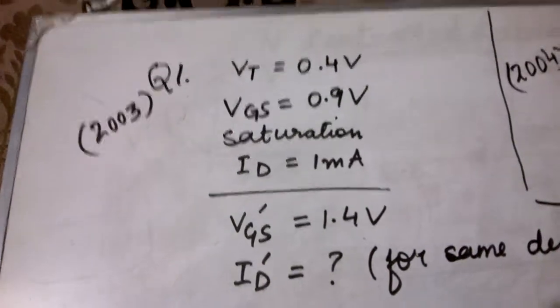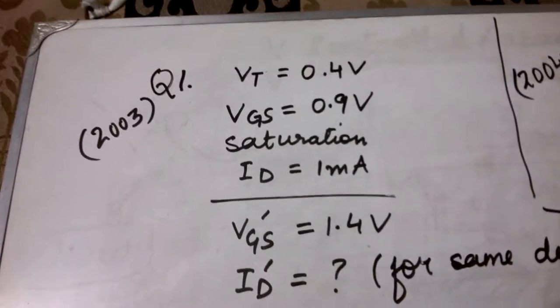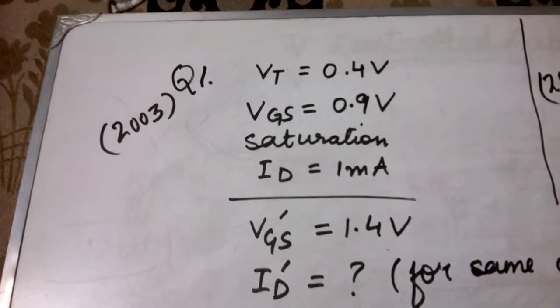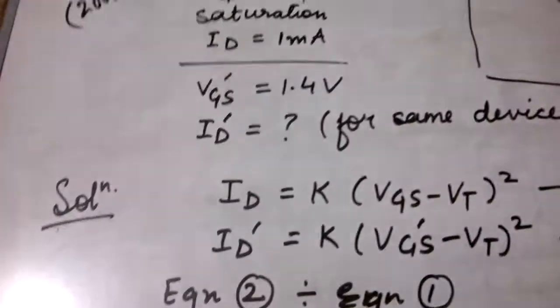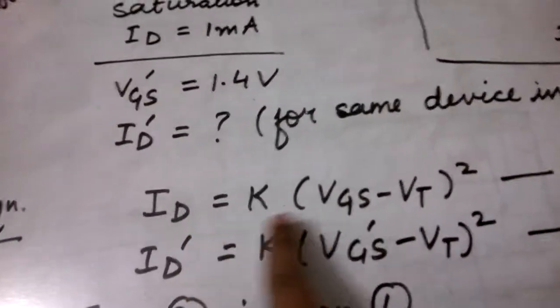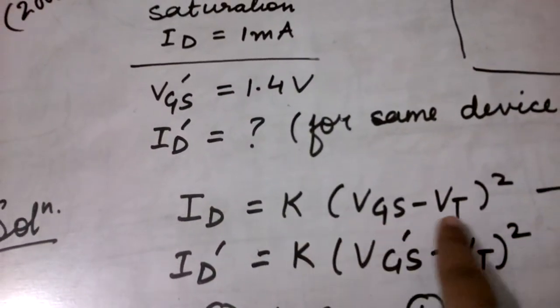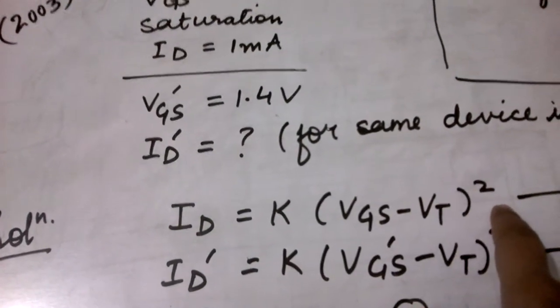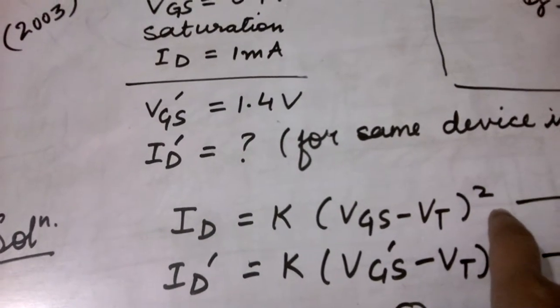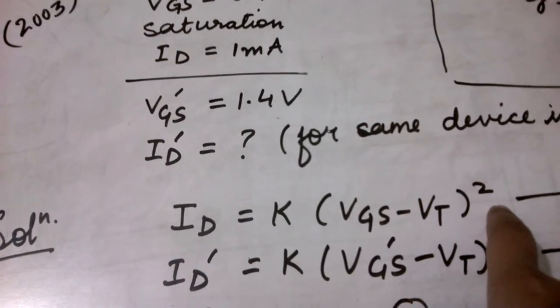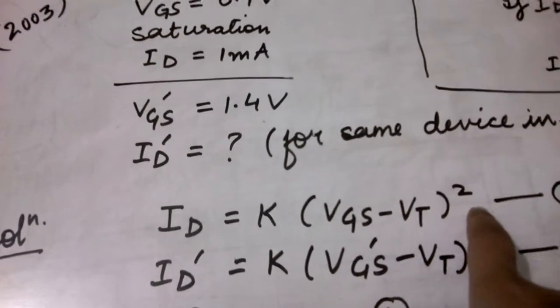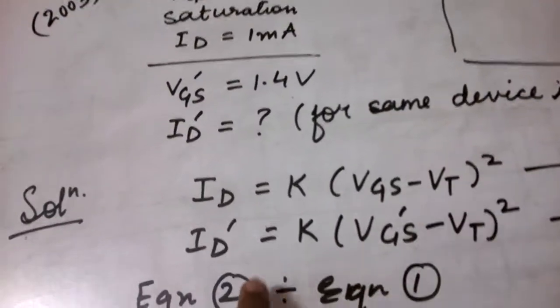We discussed in the last lecture that the drain current is equal to K times (Vgs minus Vt) whole square. This equation we will be using for solving this particular numerical. The same equation we write down for the second case.